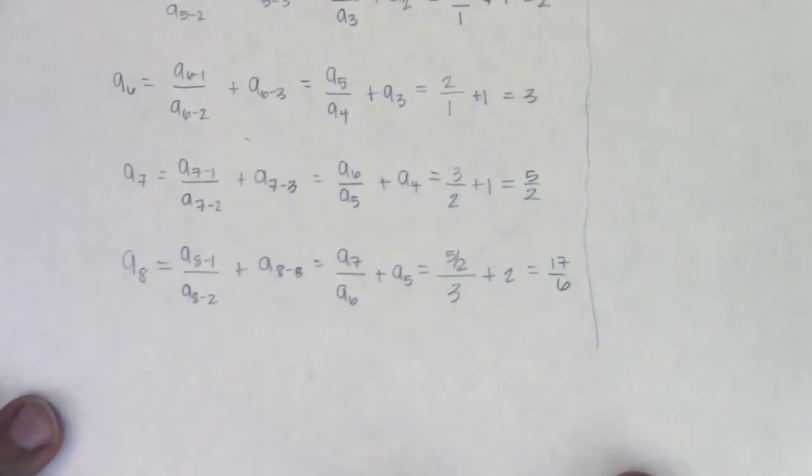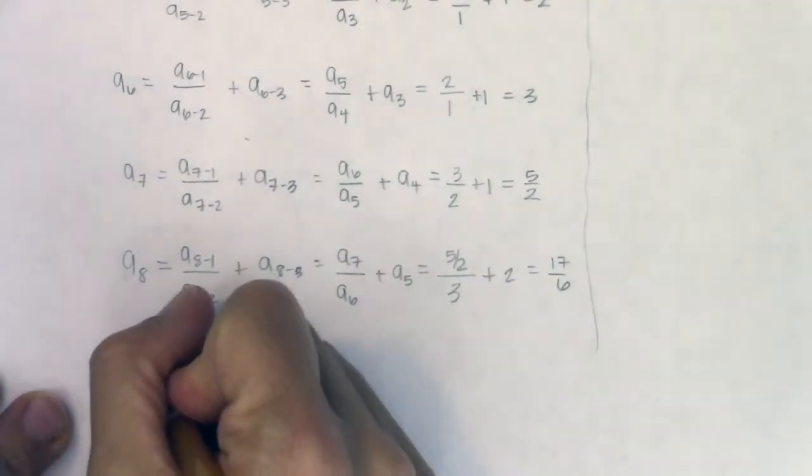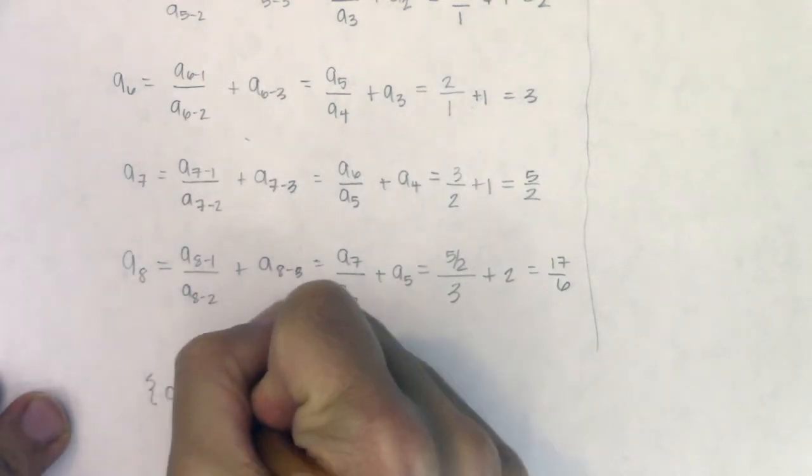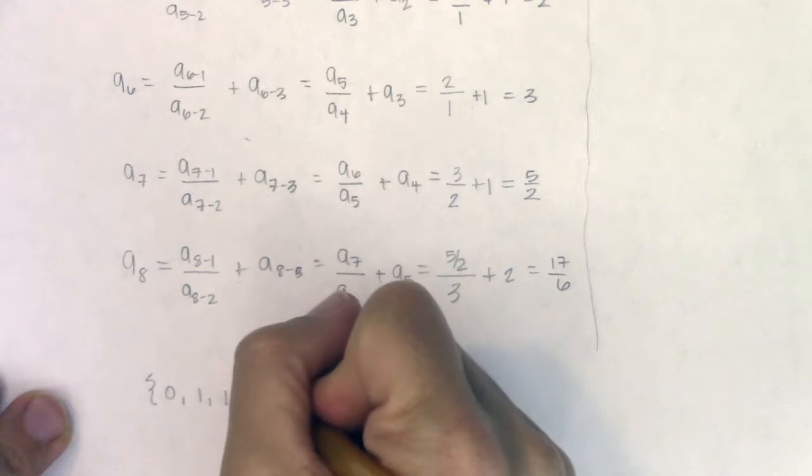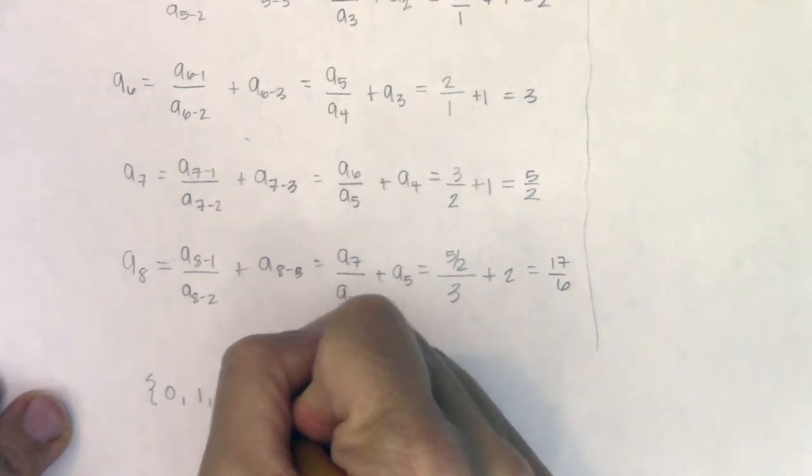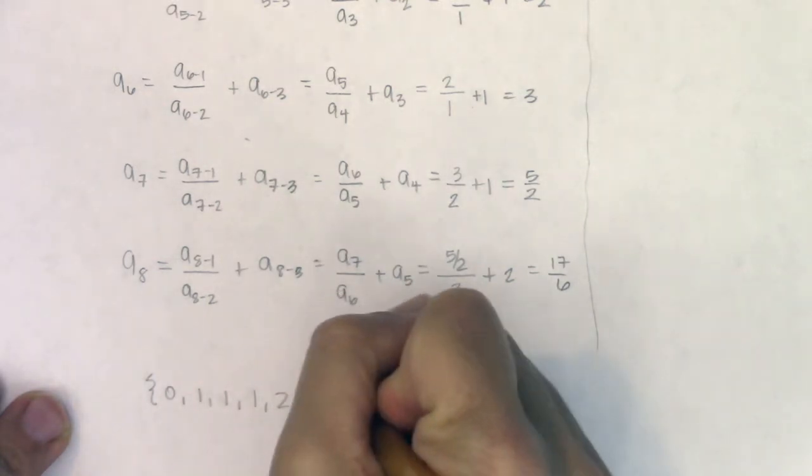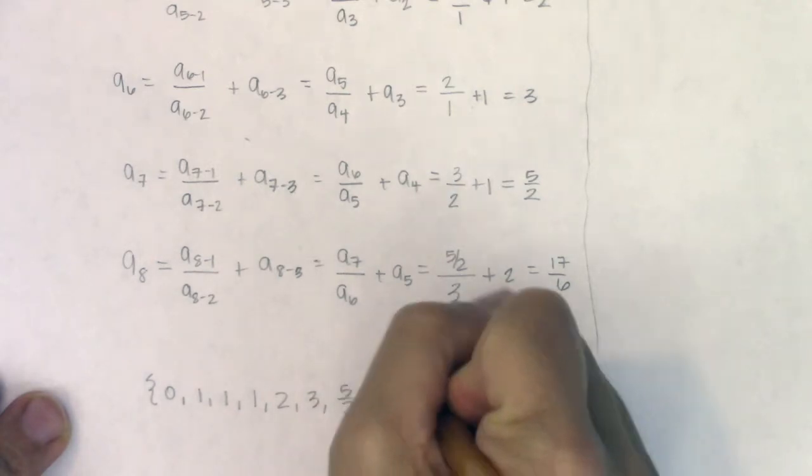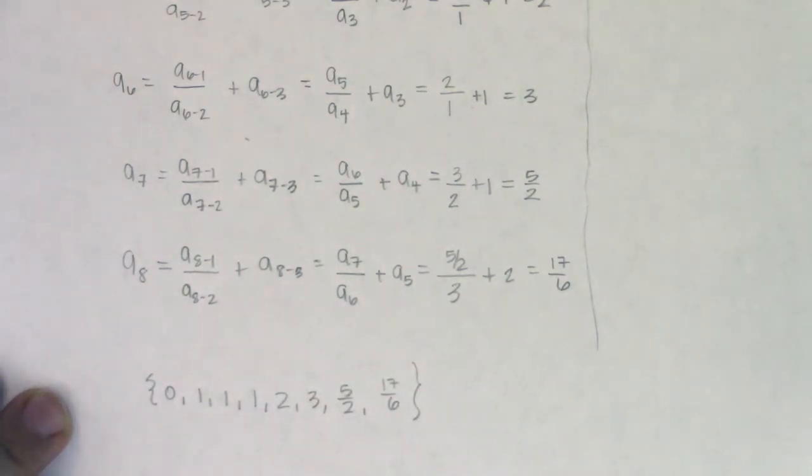So if I want to write up my final answer, it said find the first eight terms of this sequence. So my first eight terms are zero, one, one, one, and then we had another one, two, three, five halves, and then seventeen sixths. Those are the first eight terms of my recursive sequence.